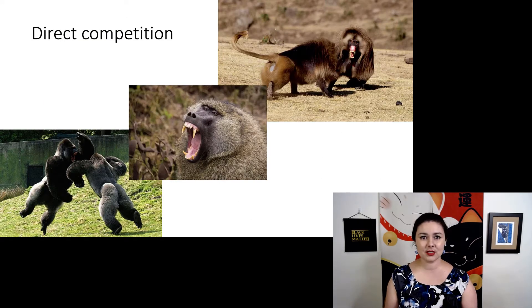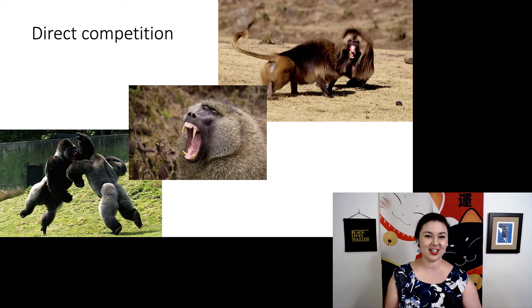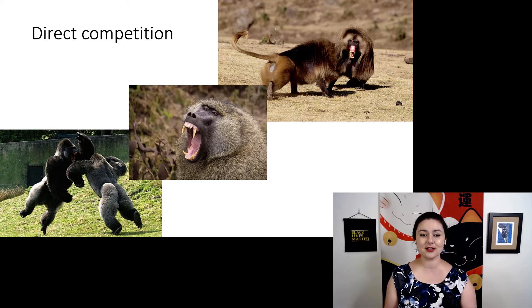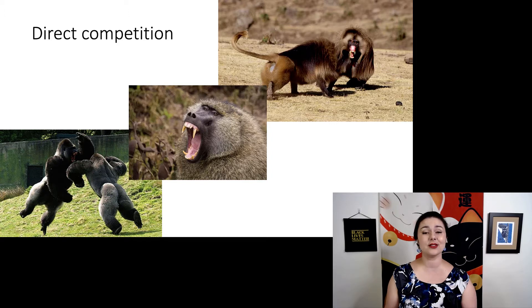Some things we'll see in sexual selection are direct competition — and that means what you think it means: fighting. At the top we have geladas with their lip flip, where they flip their upper lip as a sign of aggression to show off their canines. There are two males here fighting. Our baboon in the middle is just showing off those canines, signaling he's big and tough. And at the bottom, we have two silverback gorillas aggressively fighting. In zoos, you cannot house silverback gorillas together because that's exactly what they'll do.